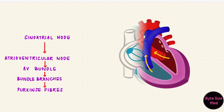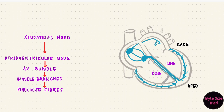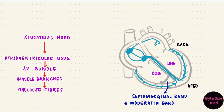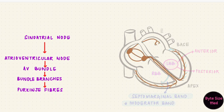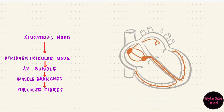The right side of the heart has something the left doesn't: a septomarginal band, also called a moderator band. This band connects the interventricular septum with the base of the anterior papillary muscle. On the left side, the left bundle branch divides into a left anterior fascicle and a left posterior fascicle. In the end, both ventricles depolarize and contract.